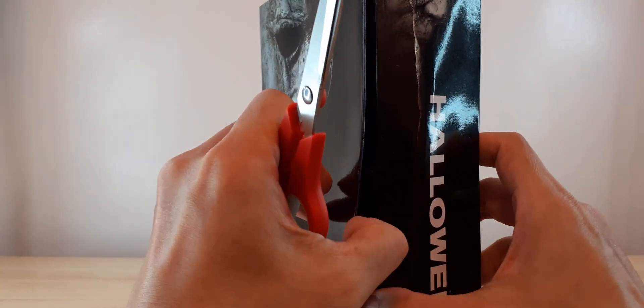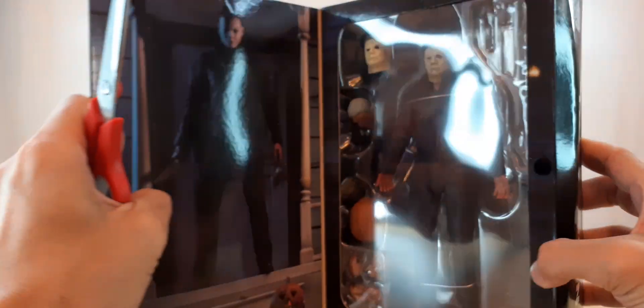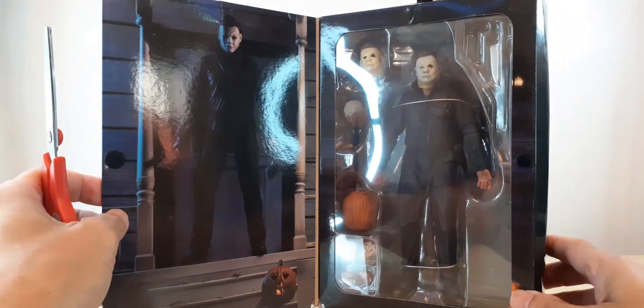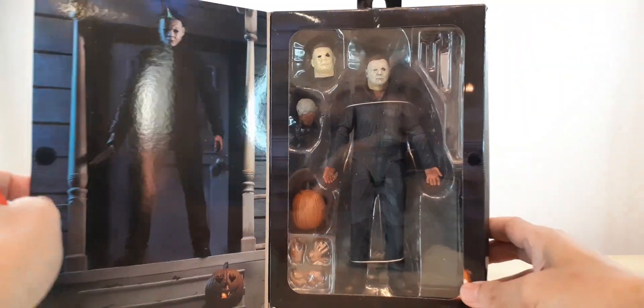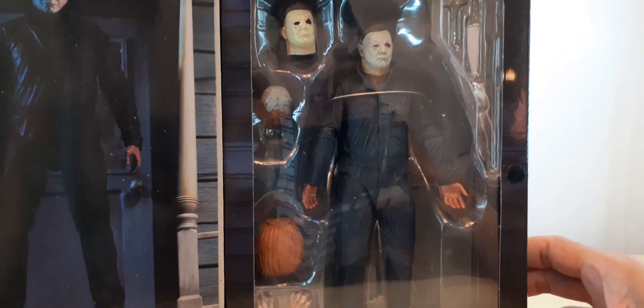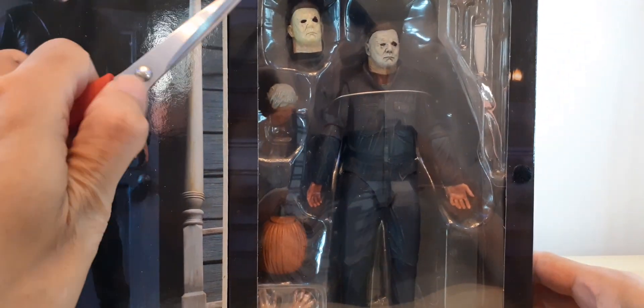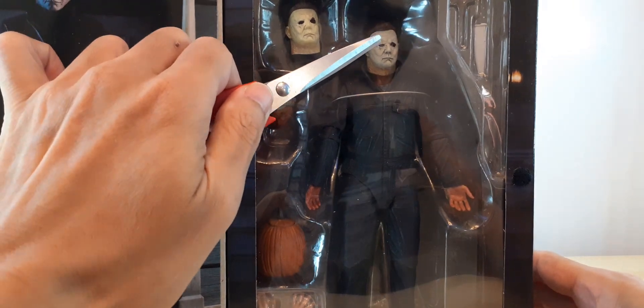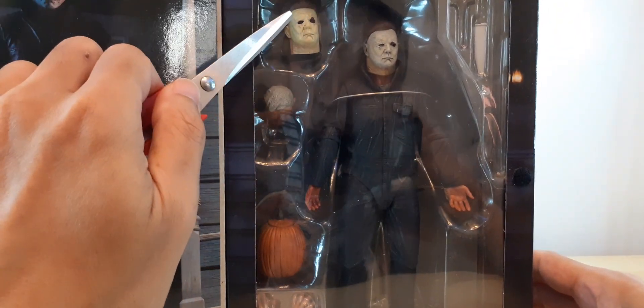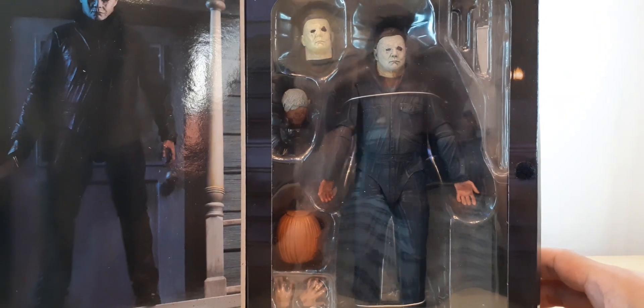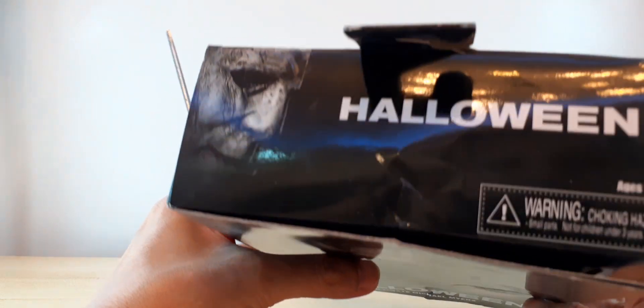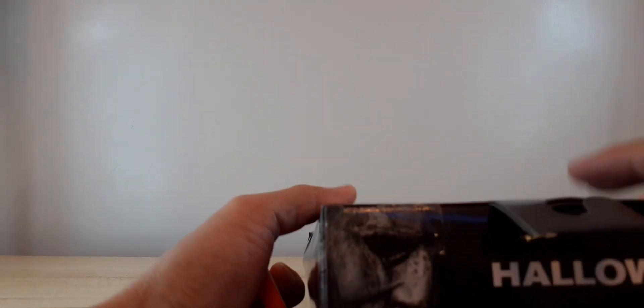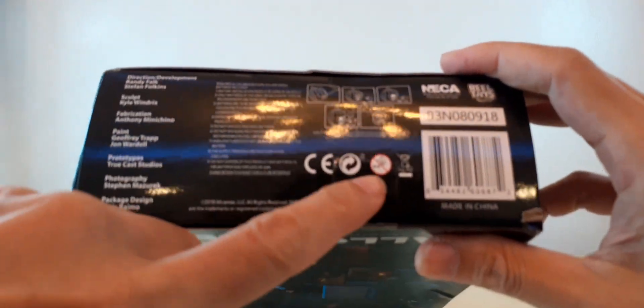Here are the folks who did this figure, and this is your copyright 2018, so this definitely came out in 2018. When we flip the flap open, here is our figure. The first thing I noticed is that Michael Myers has squinty eyes on this one.